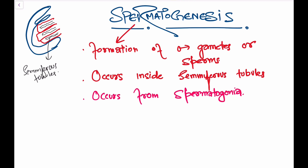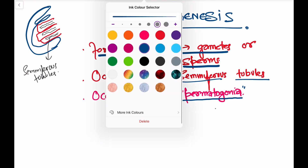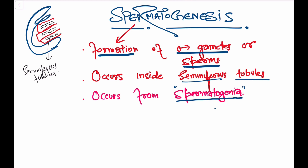To summarize so far: spermatogenesis is formation of male gametes or sperms; it occurs inside seminiferous tubules; and the cells that carry it out are called spermatogonia. These spermatogonia are diploid cells — in males the diploid number is written as 44 + XY, where 44 are autosomes.